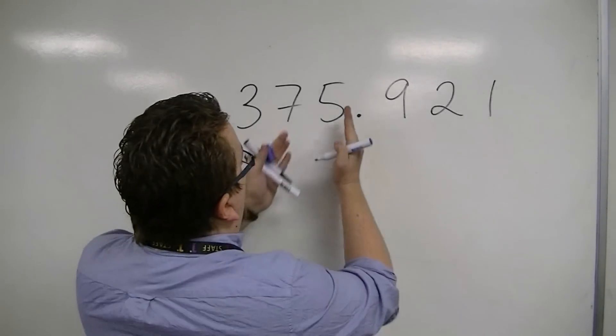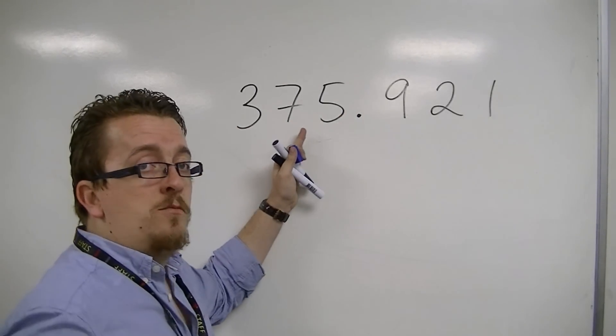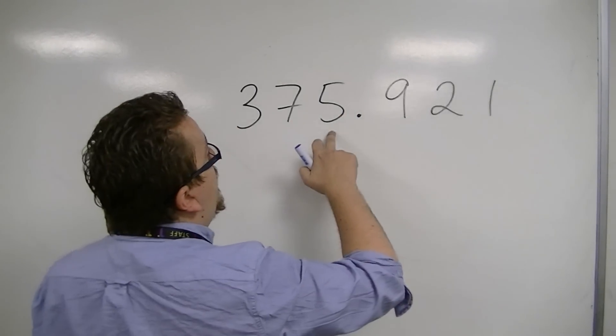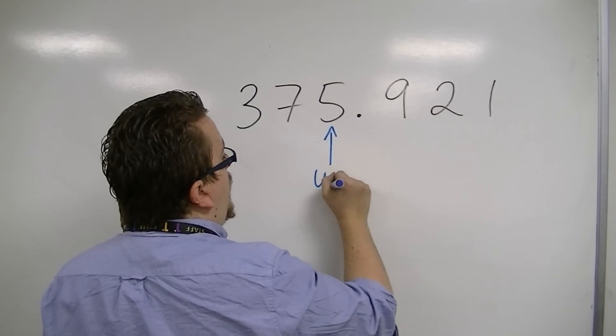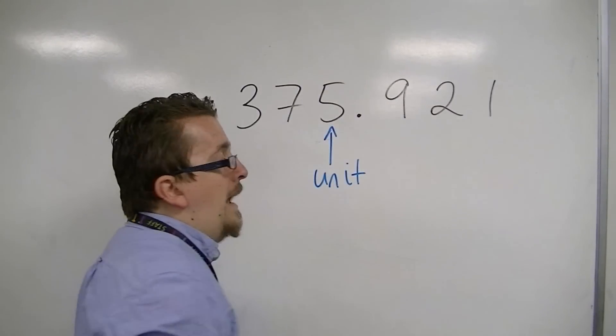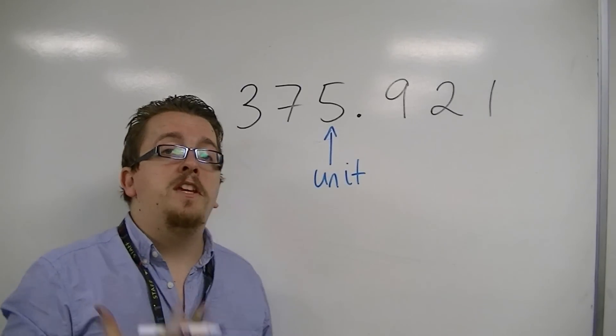We start off with this position to the left of the decimal point. This is the units column. So 5 has a unitary value, 5 units.